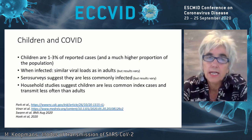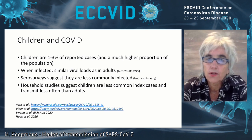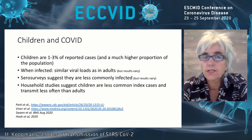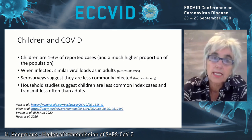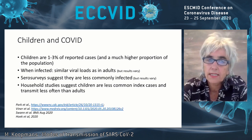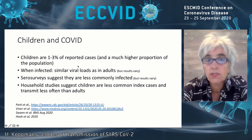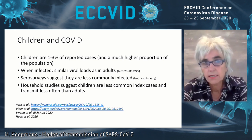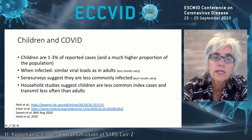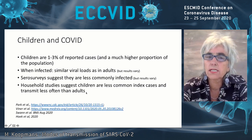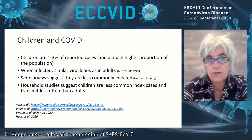Let's start with children. Children, if you look at notifications globally, are a small fraction of reported disease cases — 1 to 2%, for instance, in our region where 20% is under 19 years of age, so underrepresented. When children are infected, the evidence so far suggests that the viral loads are similar to those seen in adults, although there are studies that show variable results. Serosurveys so far suggest that children are less commonly infected, and household studies suggest that children are less commonly index cases and transmit less often.